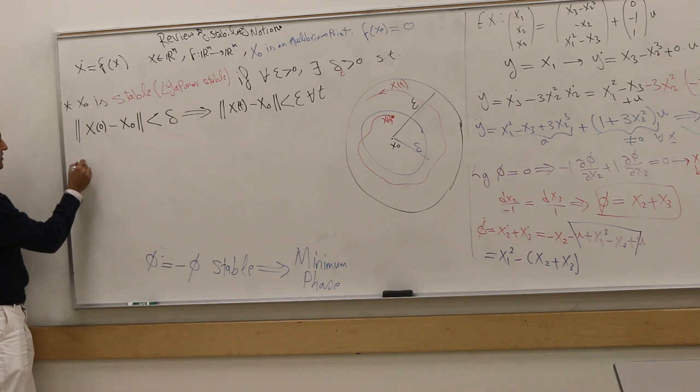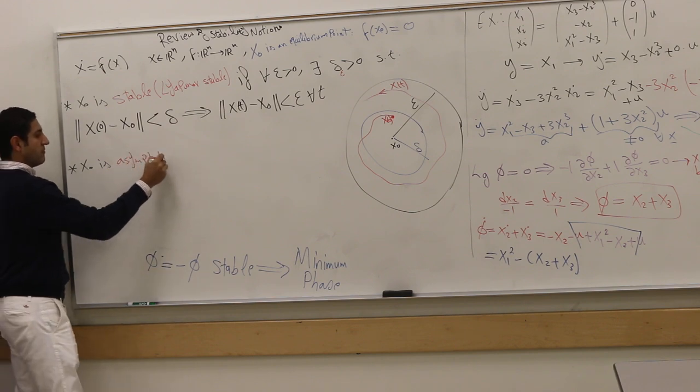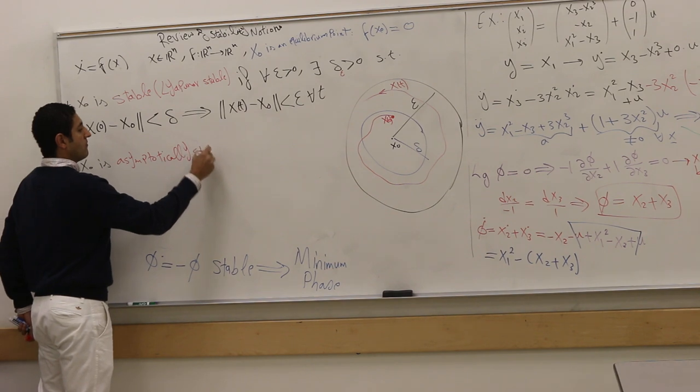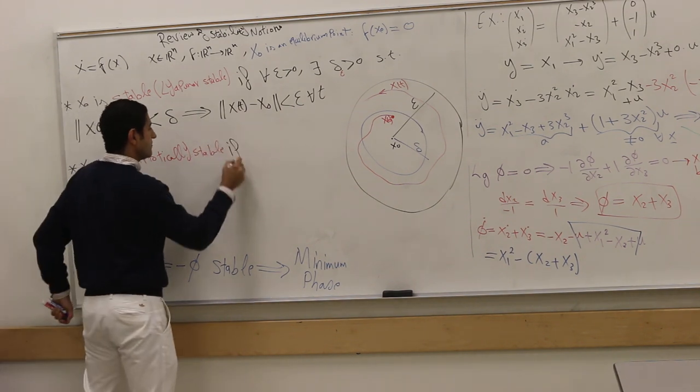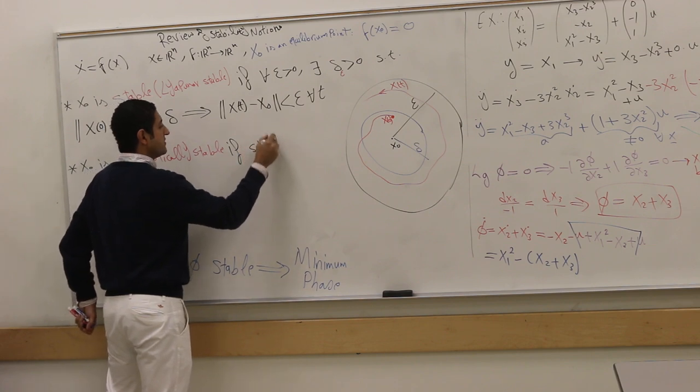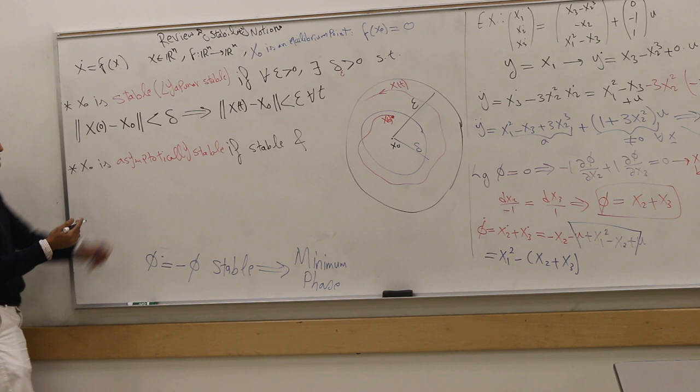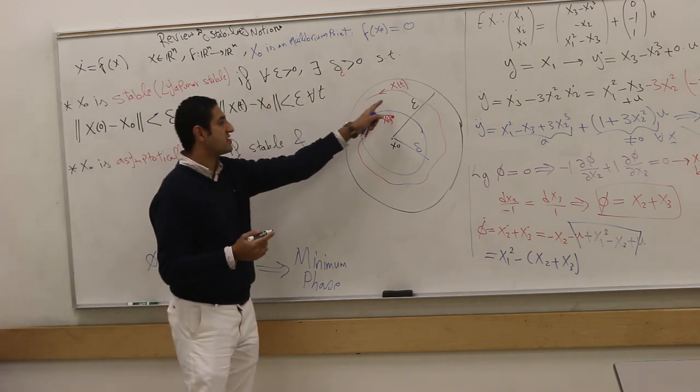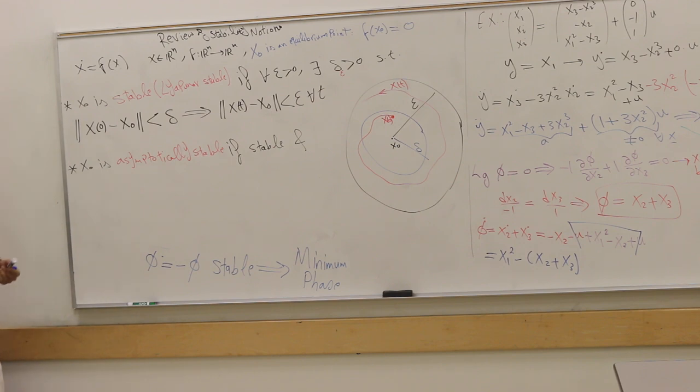And then we have asymptotic stability. So x_0 is asymptotically stable if what? If it's stable and it goes eventually to the equilibrium point. Here we didn't require - mere stability didn't require that you converge to x_0.